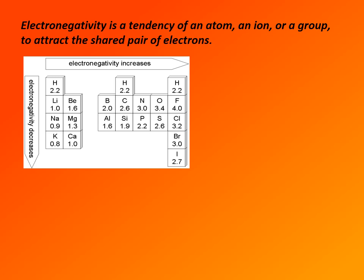Electronegativity is periodic property, and here is periodic table. This is actually very abbreviated periodic table. This is what we call sometimes organic periodic table. It shows only the few of the most important elements that are commonly encountered in organic chemistry. You can see that electronegativity increases going from left to right across a period and decreases going down a group.